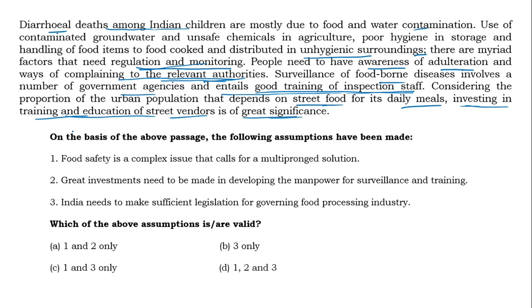Now let us read the statements. Statement 1: 'Food safety is a complex issue that calls for a multi-pronged solution.' Yes — the author stresses food safety indirectly throughout the passage and indeed tells about solutions like regulation and monitoring, awareness about adulteration, people complaining to relevant authorities, government agencies for surveillance, and investing in training of street vendors. So statement 1 is correct.